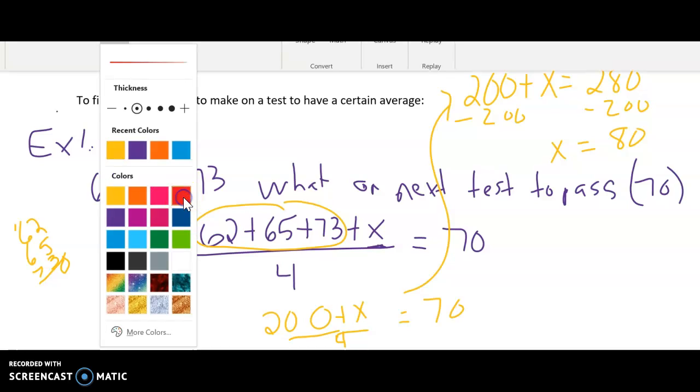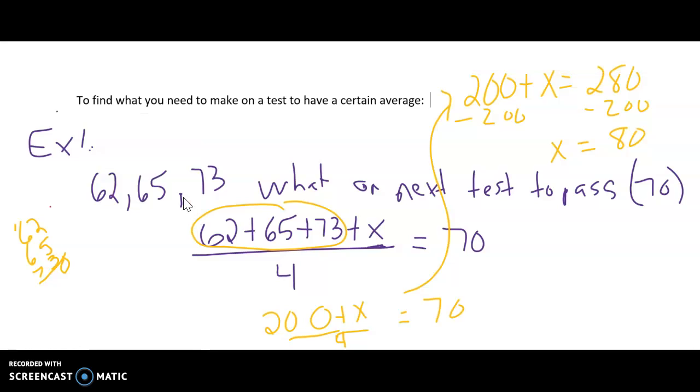Make sure if you put it in the calculator and you don't do it by hand, this is 62 plus 65, because I know some of you know how to solve equations in the calculator, plus 73 plus x. Notice I have these parentheses. Then you divide by 4 and you set that equal to 70. And so the big takeaway on this is divide by 4.